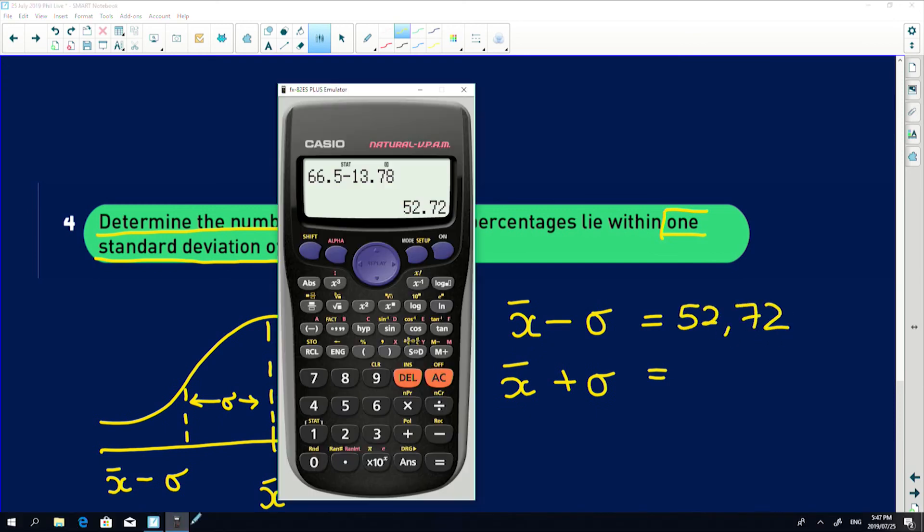And then if we say above the mean, you can just sneakily press the back arrow, delete the minus sign and add in a plus sign. And we're going to get 80.28.